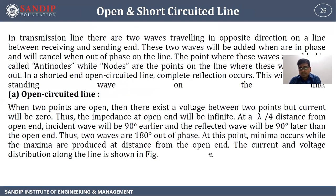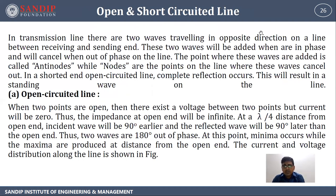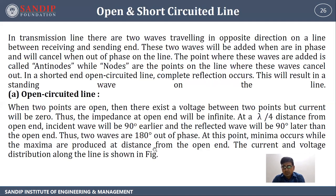Open and short circuited lines: in a transmission line, there are two waves travelling in opposite directions between the receiving and sending ends. These waves add when in phase (antinodes) and cancel when out of phase (nodes). In a shorted or open circuited line, complete reflection occurs, resulting in standing waves. For an open circuited line, voltage exists between the two points but current is zero, so impedance at the open end is infinite. At λ/4 distance from the open end, the two waves are 180° out of phase, producing minima, while maxima occur at other distances.